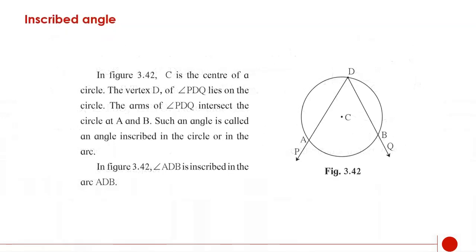What is the meaning of inscribed angle? In figure 3.42, C is the centre of a circle. The vertex D of angle PDQ lies on the circle. The arms of angle PDQ intersect the circle at A and B. Such an angle is called an angle inscribed in the circle or in the arc. So angle ADB is inscribed in the arc ADB.